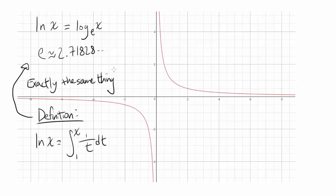Let's begin with this function. This graph is from Desmos.com, and I have graphed 1 over t. This is a t-axis instead of an x-axis, and y is the vertical axis. When you graph 1 over t, it looks like this. Our definition for natural log is the integral from 1 — this point right here is 1 — to x, under this curve.